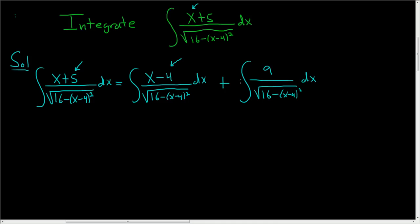If that step is not clear, think of it this way. x plus 5 is really x minus 4 plus 9, because minus 4 plus 9 is 5. And then we basically break it up. We have x minus 4 over all this stuff, and then 9 over all this stuff. The reason we did that is because now we can use u-substitution to do this first integral. And the second integral is simply going to be an arc sine.